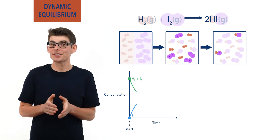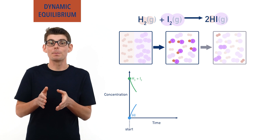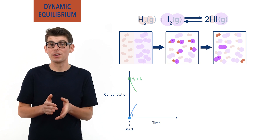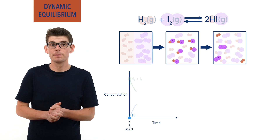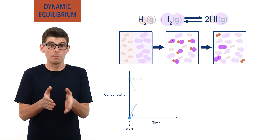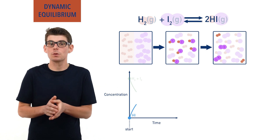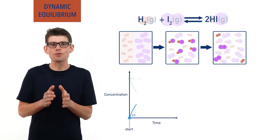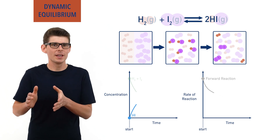As hydrogen iodide starts to get formed, it can start to react to form hydrogen and iodine — the backwards or reverse reaction. Initially, there is a low concentration of hydrogen iodide, meaning the rate of this reverse reaction is pretty slow. However, as the concentration of hydrogen iodide starts to increase from more of the hydrogen and iodine reacting together, the rate of the backward reaction will start to increase and will happen faster. As time goes on, the rate of the forward reaction decreases and the rate of the reverse reaction increases.